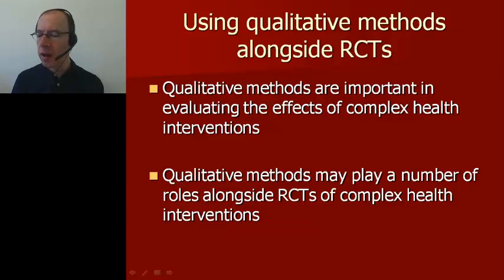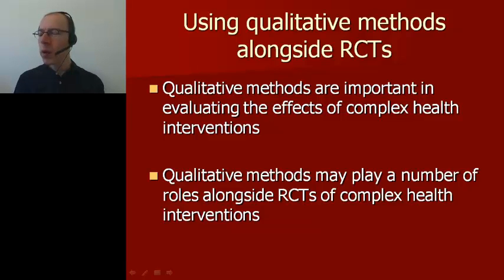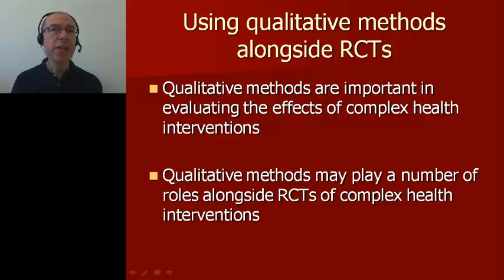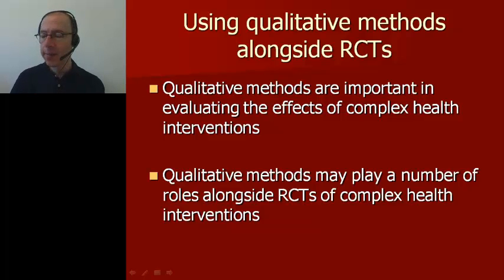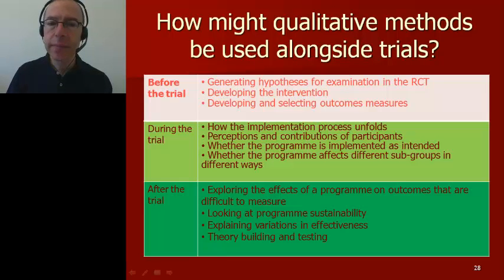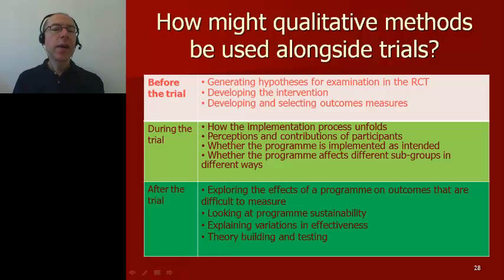Although qualitative studies alongside randomized controlled trials are not yet common — most trials don't include qualitative components — there is great interest in how they can be used more frequently. Qualitative methods alongside trials may be particularly important for complex interventions, such as those involving patient behaviors like adherence to treatment, health system changes such as free care policies, and public health interventions such as campaigns to reduce smoking or promote safer driving. The potential roles can be divided into three components: before a trial, during the trial, and after it has been completed.